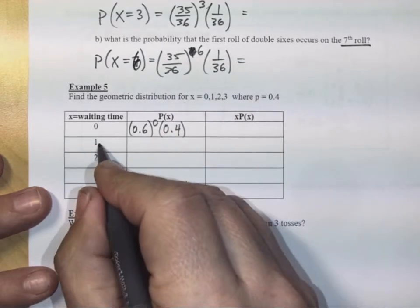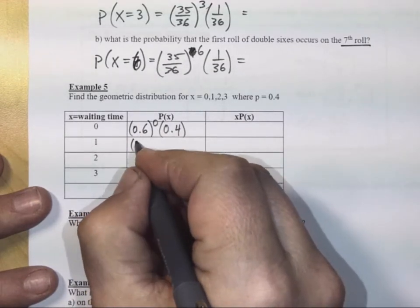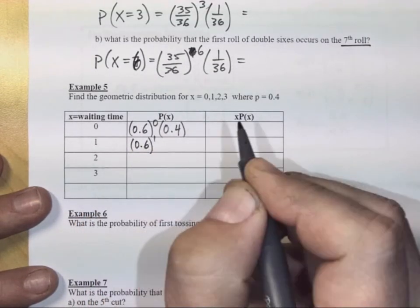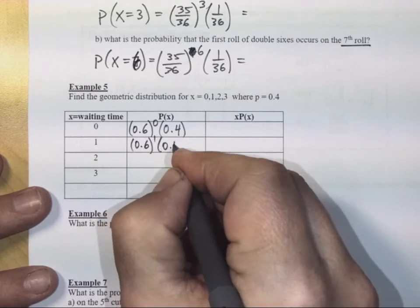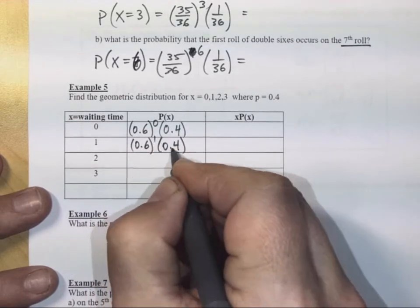What about waiting through one trial? Well, if you waited through one trial, that means that you must have failed once, and then you got success. Yes, so 0.6 to the one times 0.4.